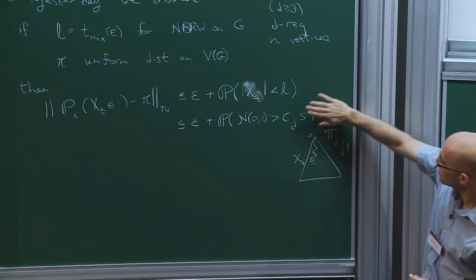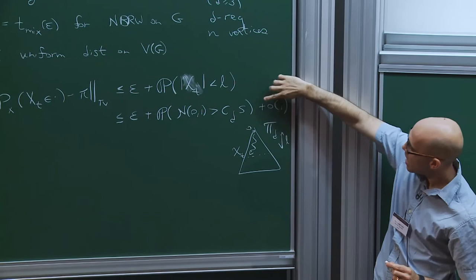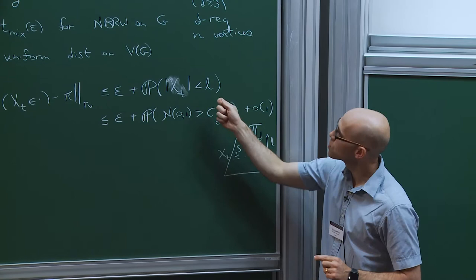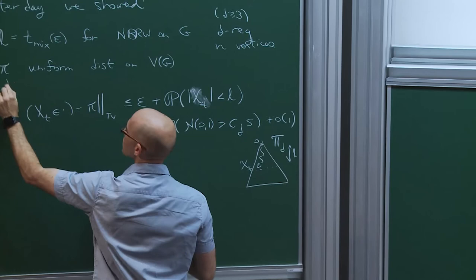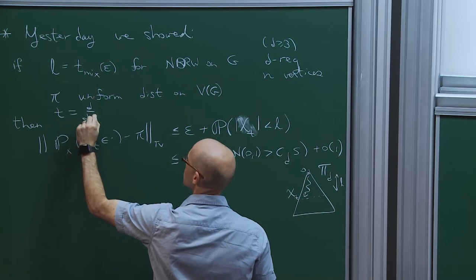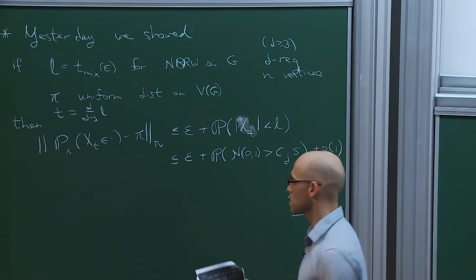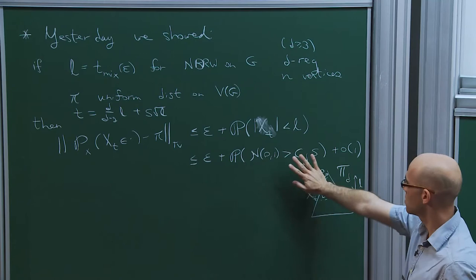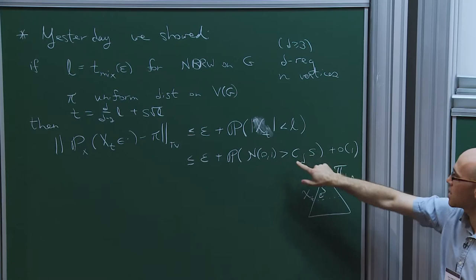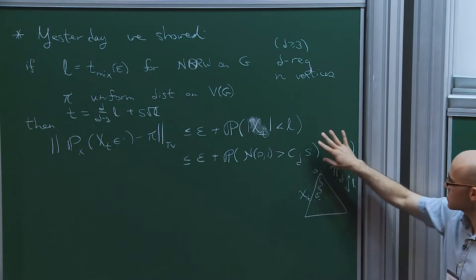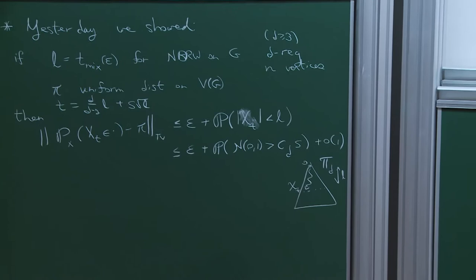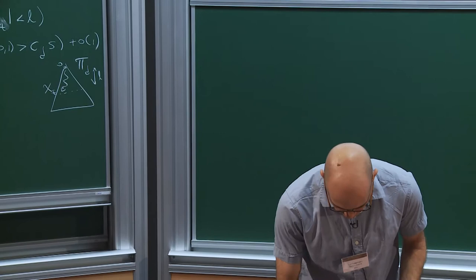This formula was missing a little-o of one — thank you for the comment. This little-o of one comes from the CLT. We chose t to be d over d minus 2 times l, which accounts for the speed of simple random walk as opposed to non-backtracking random walk — the speed on the tree — plus s times square root l. This accounted for replacing the probability of reaching that height by that time, and so on.